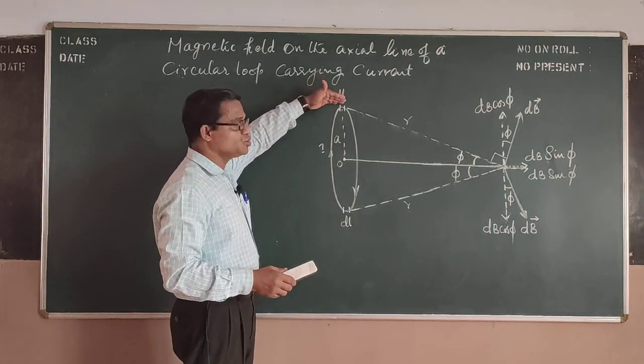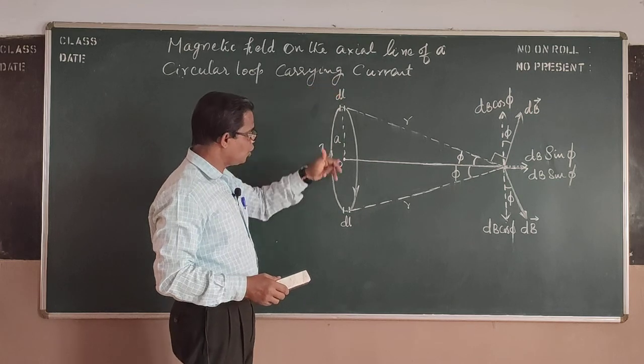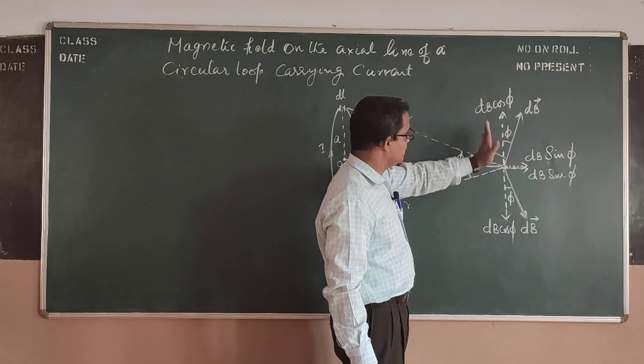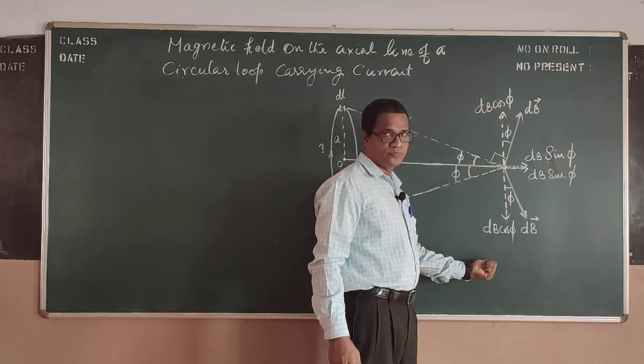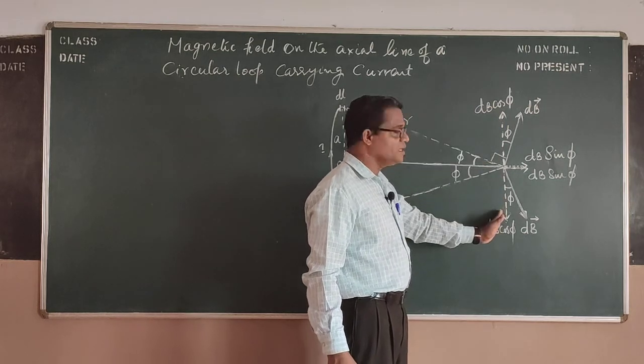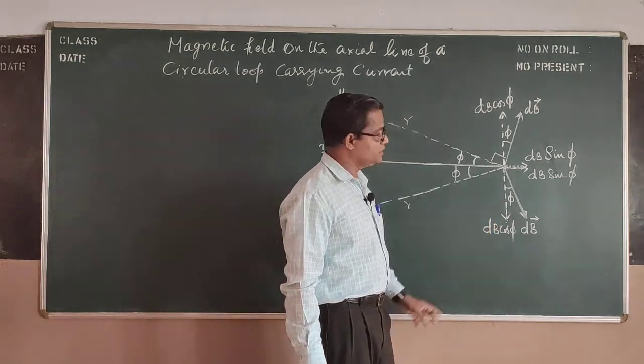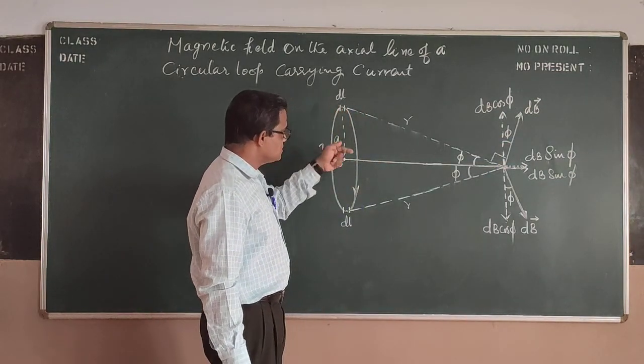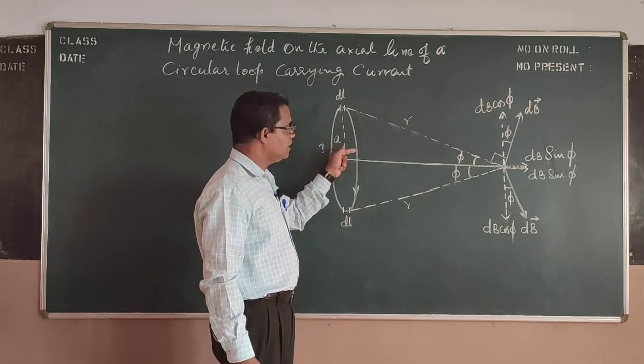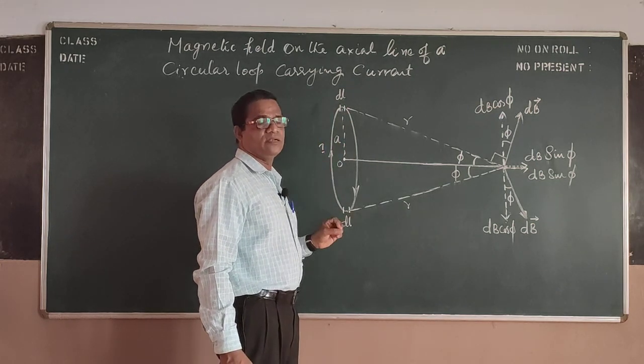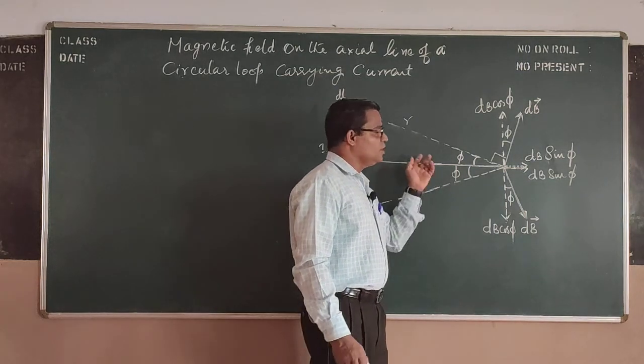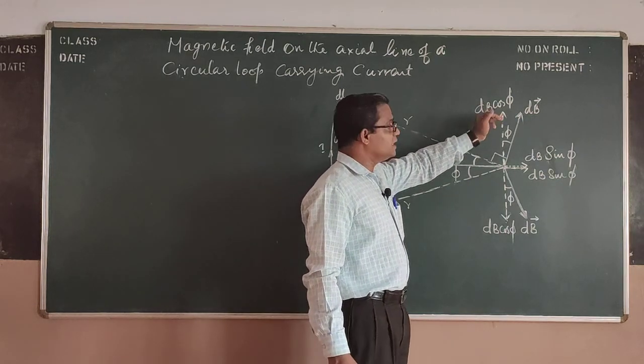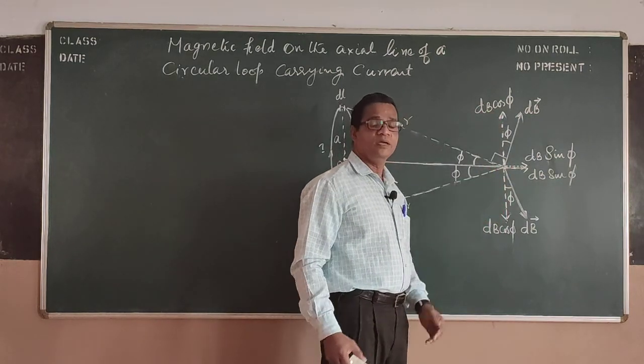So when I consider the two elements diametrically opposite, I get the same component DB cos phi, one upward and the other downward. So this DB cos phi and this DB cos phi will be equal and opposite, so the effect is cancelled. So when I go around this, every point I take as DL, diametrically opposite to that, there will be another DL we can consider. Therefore, when I consider the whole loop carrying current, the vertical component of the field at this point will be cancelled.